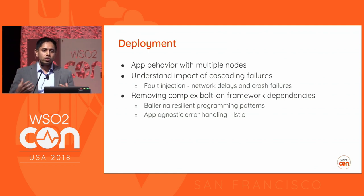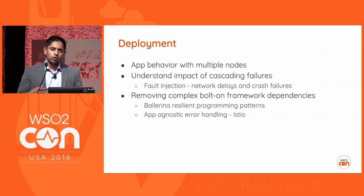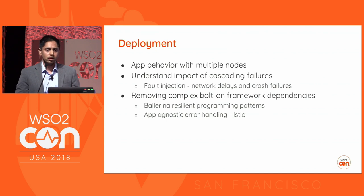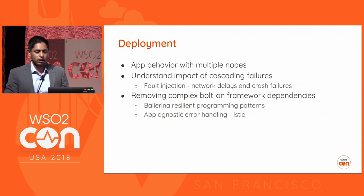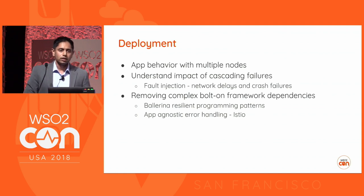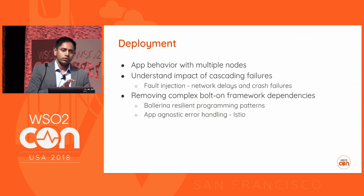This toolchain allows you to decouple your code from having to take dependencies on complex bolt-on frameworks to do specific error handling. For example, one of the popular frameworks for error handling is Netflix Hystrix. You have to take a dependency on that and then use constructs provided by the library to do error handling. If you look at things like Ballerina, there are certain resiliency patterns built into the language, so that allows you to use language built-in constructs rather than taking dependencies on external complex frameworks.